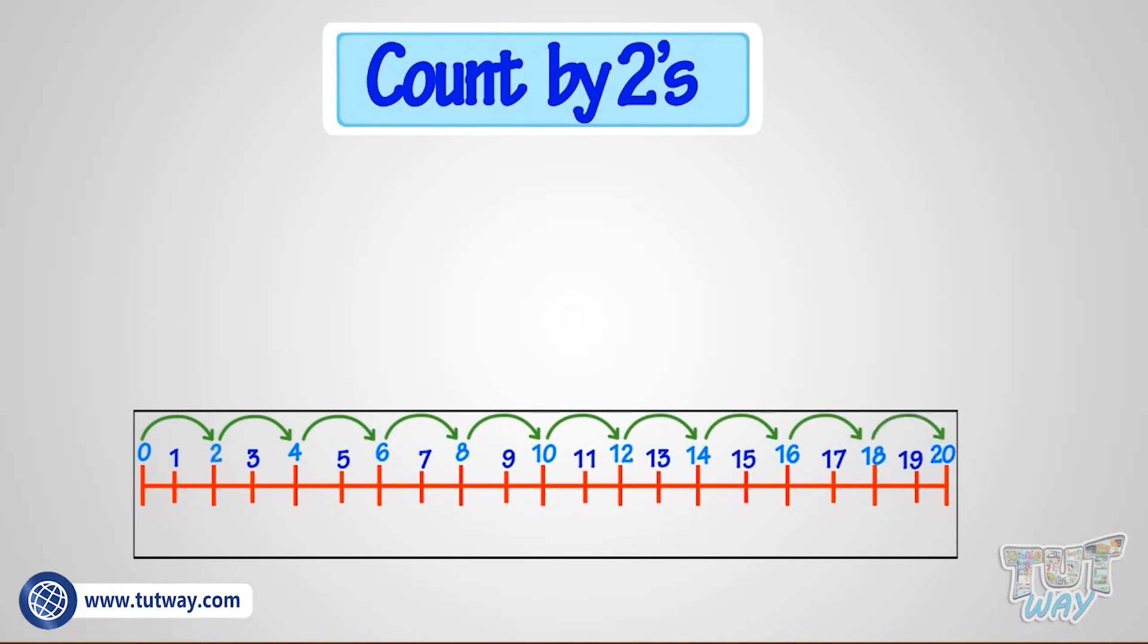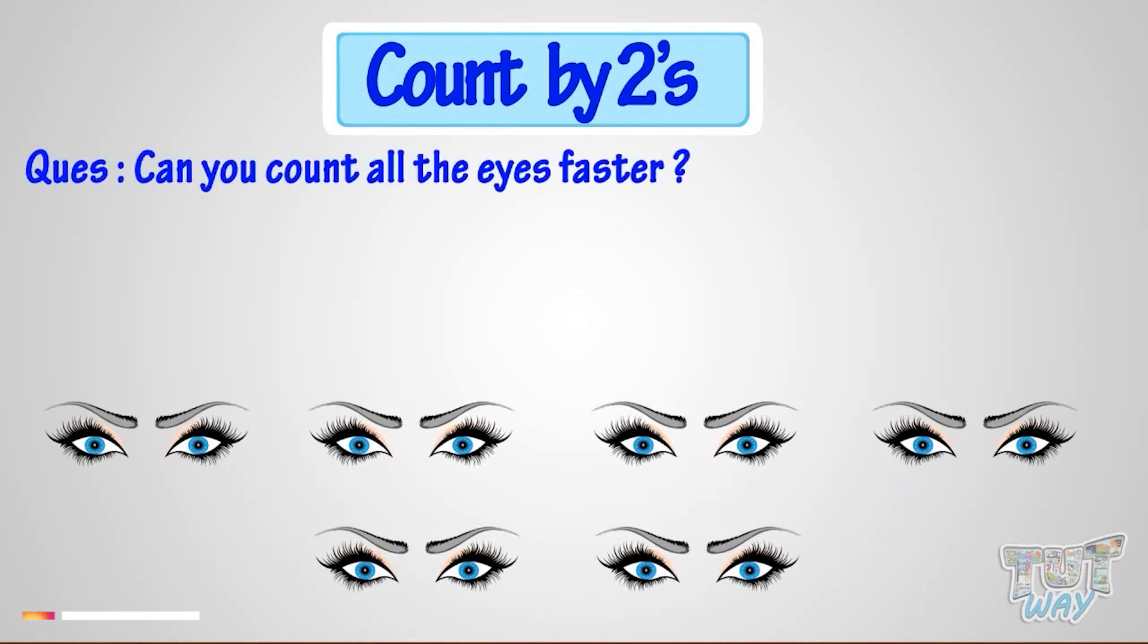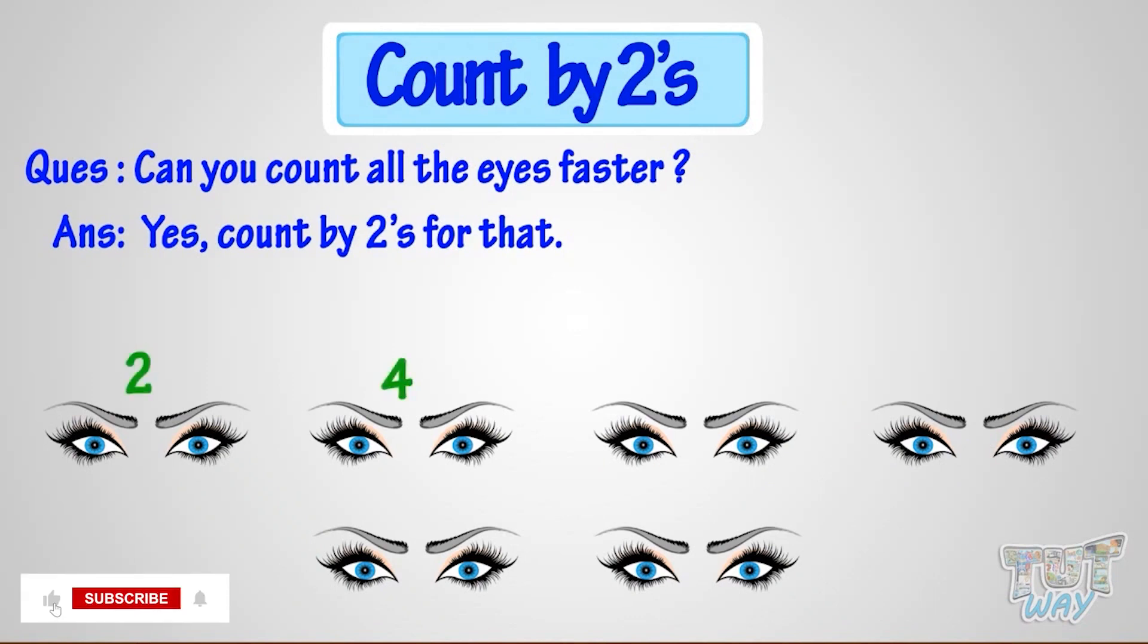We can count by twos. Now if I ask you to count all the eyes, can you count faster? Yeah! Count by twos for that like this. Two, four, six, eight, ten, twelve.